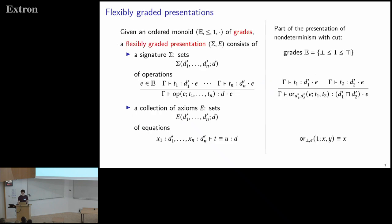In a bit more detail: the general story about grading involves some ordered monoid of grades. A flexibly graded presentation first has a signature sigma specifying operations, where every operation gets a list of input grades d-prime and an output grade d. Given a signature, we generate a notion of term, and then a presentation has a bunch of equations — pairs of terms — which are the axioms.